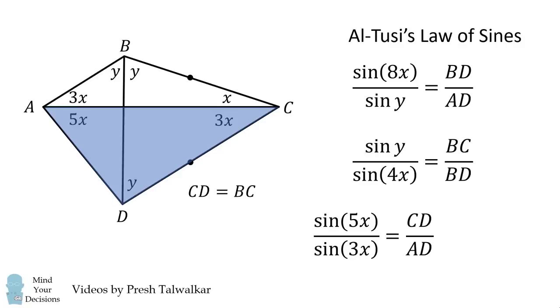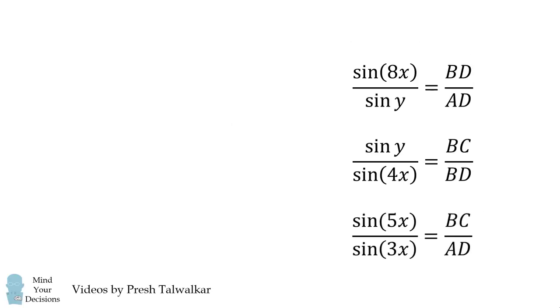Now, we recall that CD is equal to BC, so this ratio is also equal to BC over AD.